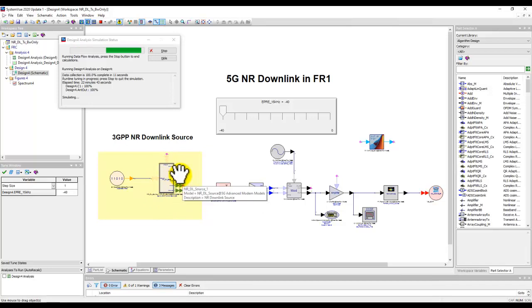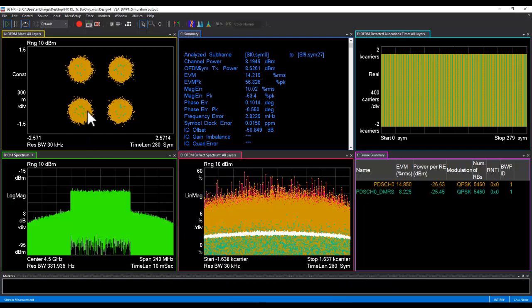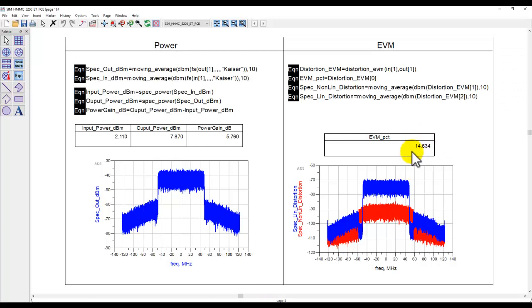This simulation, as you can see, is continuously running. SystemVue is sending the data to VSS software. Once we switch to VSS software, we can see the demodulated spectrum, the constellation error in each carrier, as well as the quick snapshot of all the key figures of merit. In here, if you observe, we get an EVM for PDSCH channel, which I have activated right now as 14.8%, which is very well co-aligned with 14.6% which we were getting in ADS. Great value here.